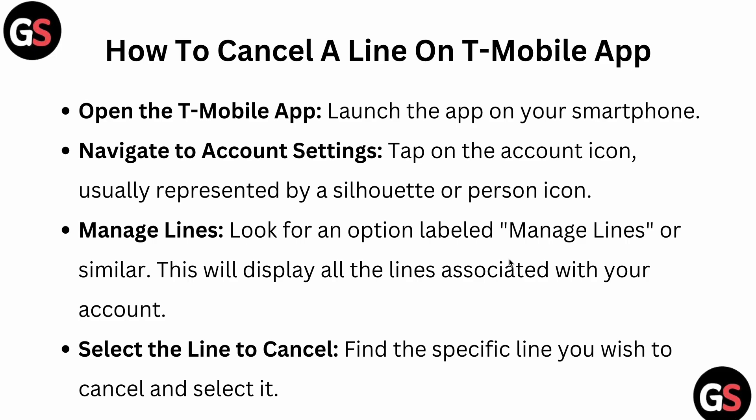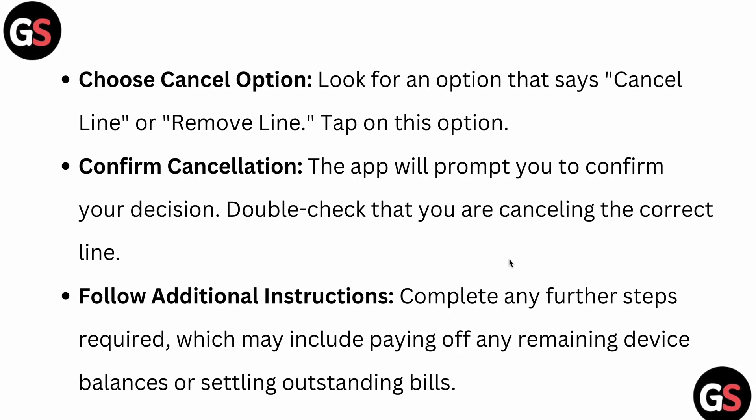Choose the cancel option and look for the option that says 'Cancel Line' or 'Remove Line' and tap on it. The app will prompt you to confirm your decision, so double check that you are cancelling the correct line.